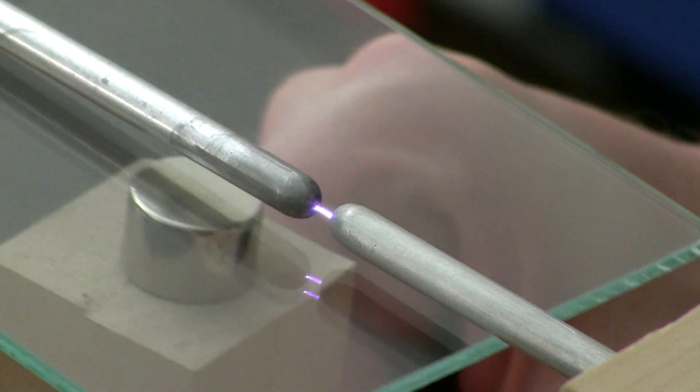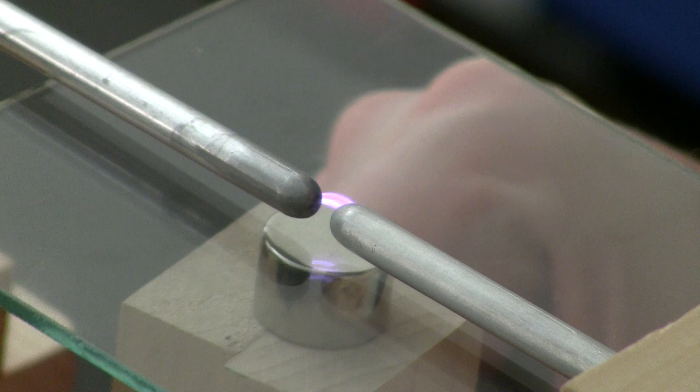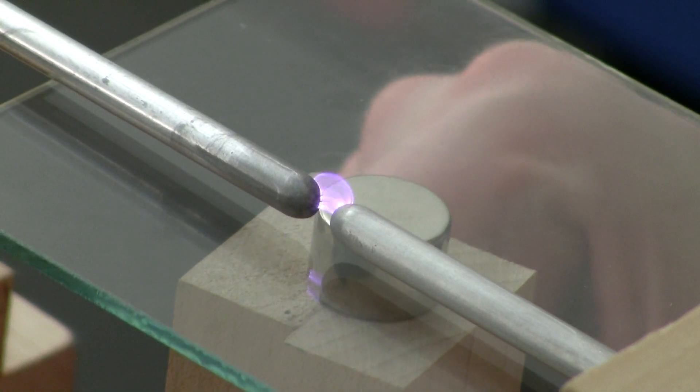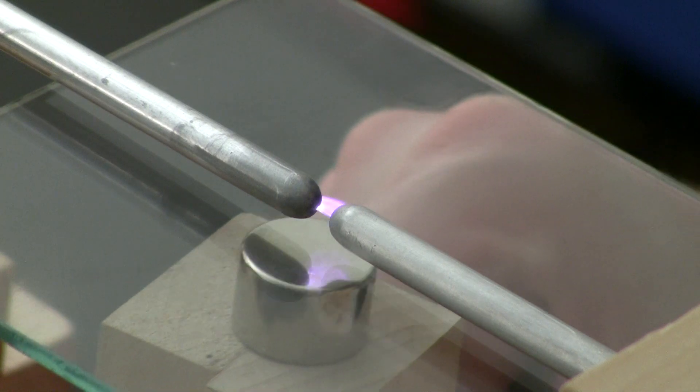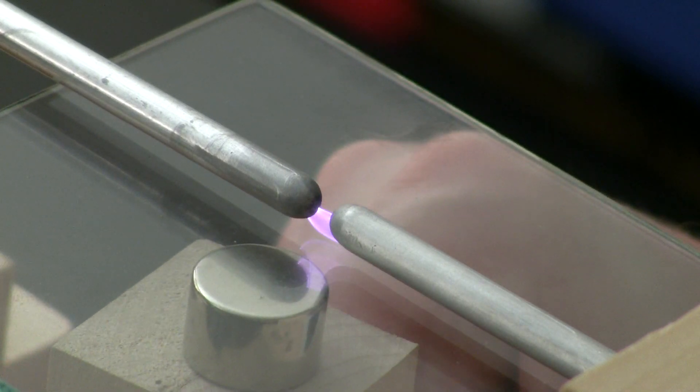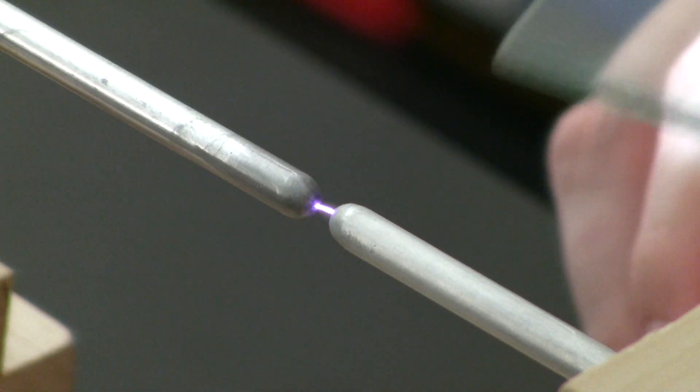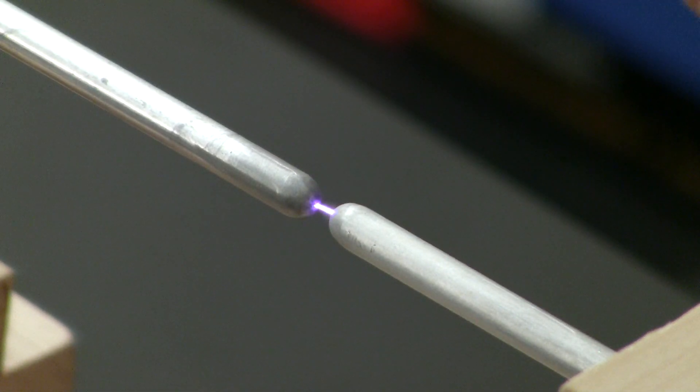Here it's running with just one of the magnets, so you can see how the magnetic field affects the spark. Now I'm just going to flip over the magnet so you can see it from the other side.